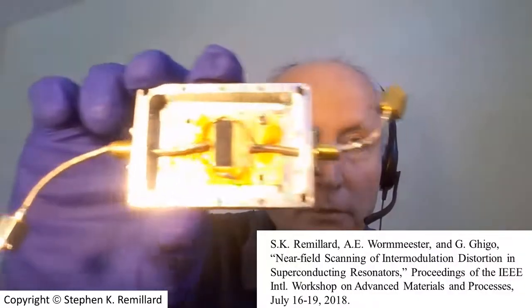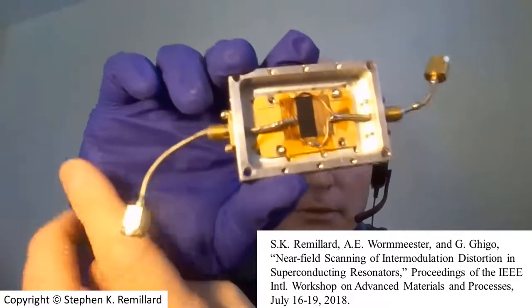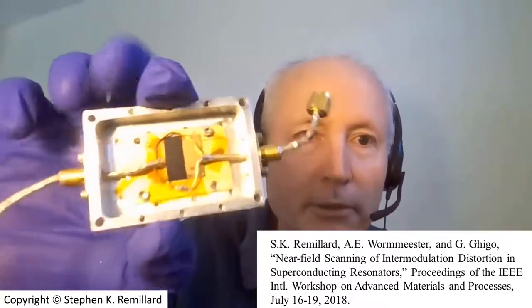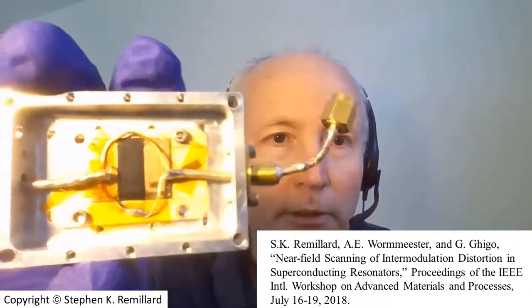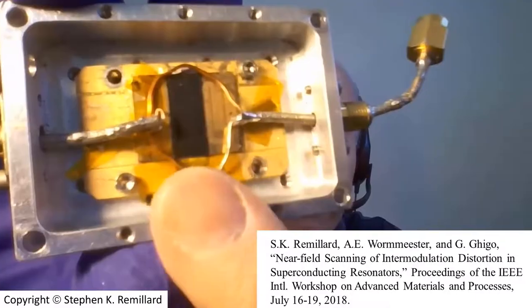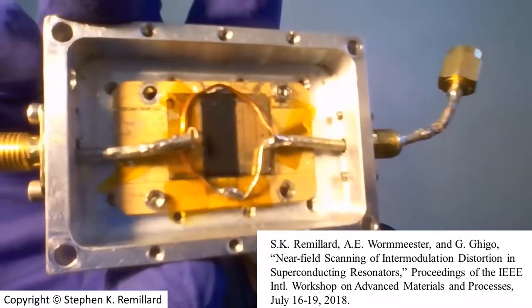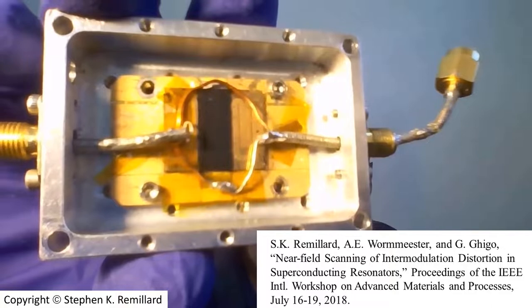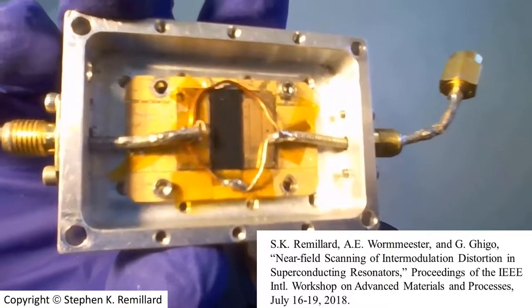In my research, I often work with single resonators that are connectorized. Here I have my SMA input and output, a loop antenna, and an electric dipole antenna bringing power in and out. The black chip is the resonator itself. I excite it on resonance and measure the power dissipated in it. From that, I use electromagnetic field analysis to determine the fields.